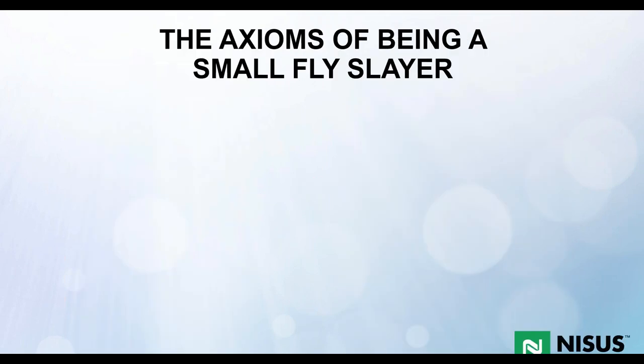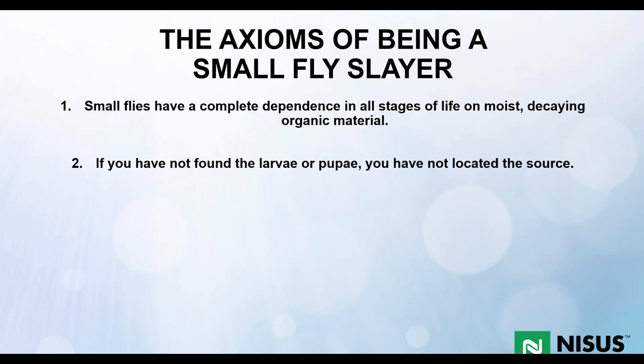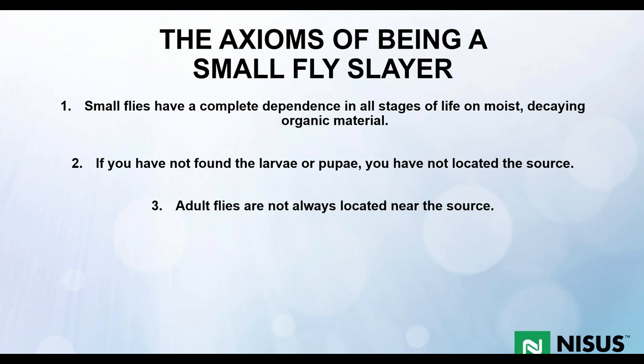So what are the axioms of being a small fly slayer? First, small flies have a complete dependence on moist organic material at all stages of their life. Second, if you have not found the larva or the pupa, you've not located the source — the breeding area that harbors larval activity. Traditionally, controlling this requires what we call inch-by-inch pest control, which is very time consuming. Third, adult flies are not always located near the source. UC Berkeley did a study establishing that fruit flies can fly up to eight miles.